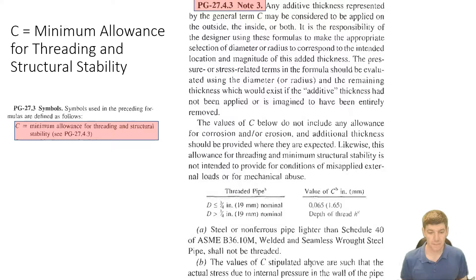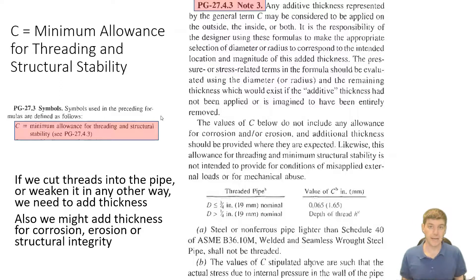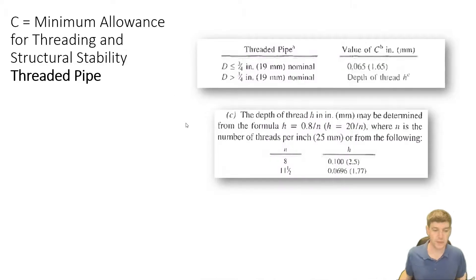What this is talking about is C is really a factor that we can add in to increase the thickness of a pressure part if we know that we're going to have some problem. And that problem might be because we've cut threads into the pipe. But it could also be that in order to maintain the structural integrity of the pipe, so it has a large overhang or something like that, or has to carry a load, we may need to strengthen the pipe by adding in extra thickness. And it could also account for things like corrosion or erosion. So over time, that pipe is going to lose some of its thickness, and we may want to take that into account.